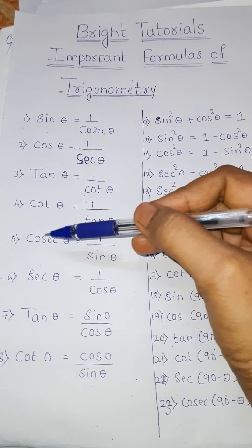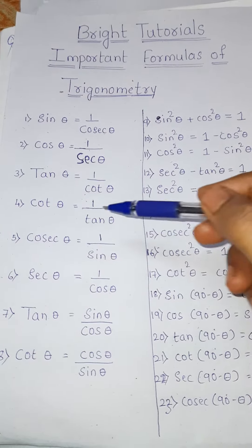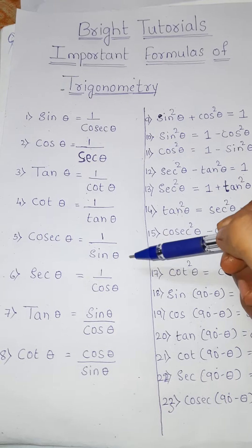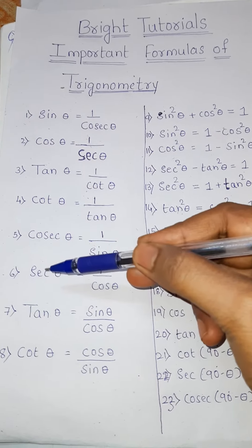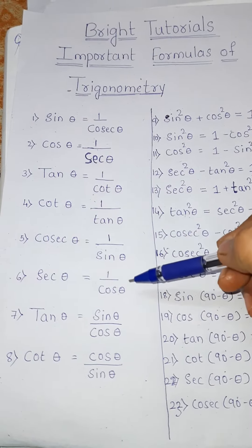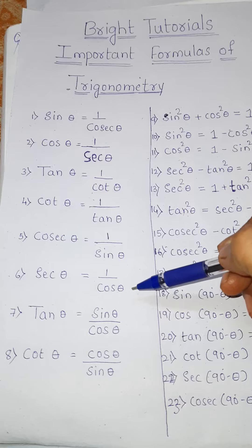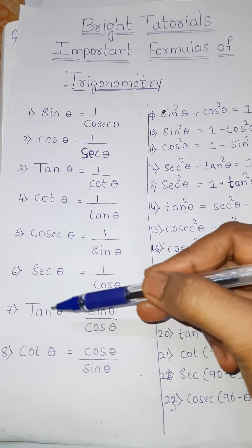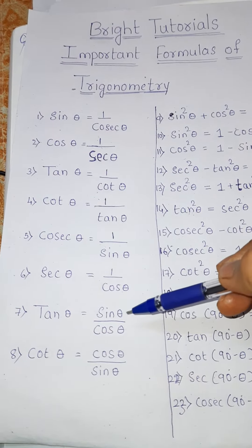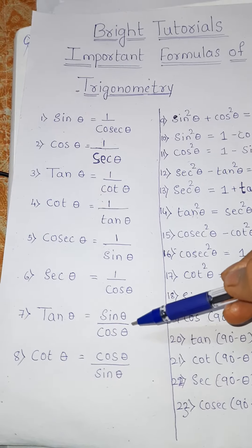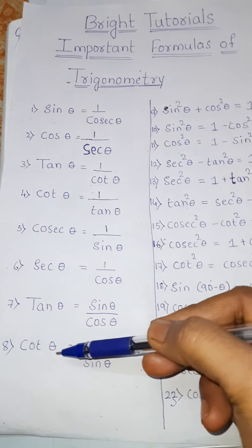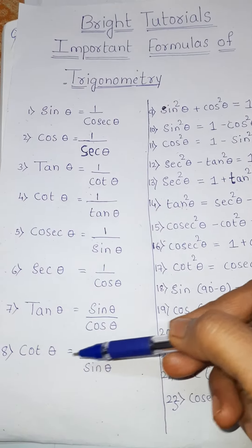Fourth one: cot theta is equal to 1 by tan theta. Fifth one: cosec theta is equal to 1 by sine theta. Sixth one: sec theta is equal to 1 by cos theta. Seventh one: tan theta is equal to sine theta by cos theta.